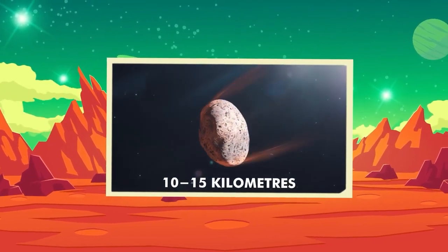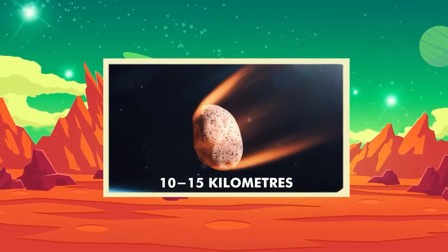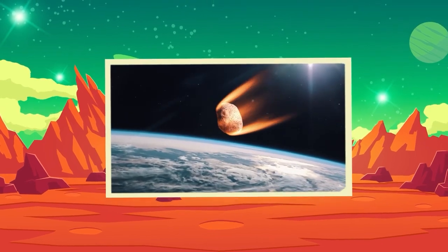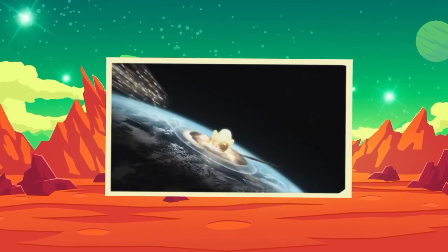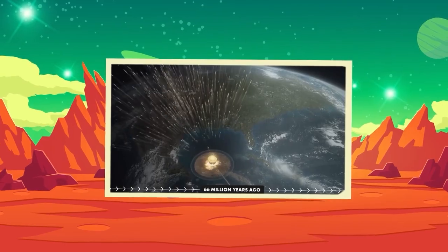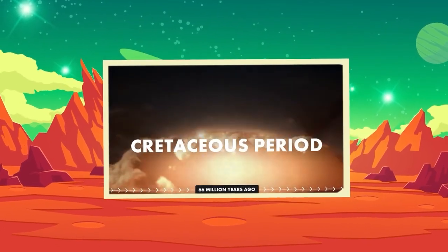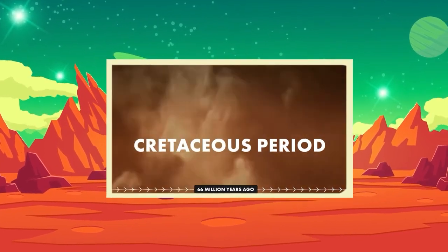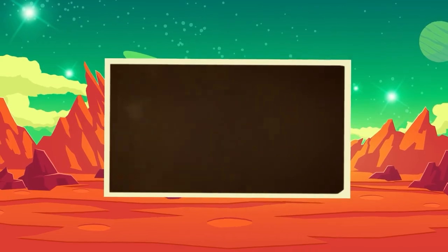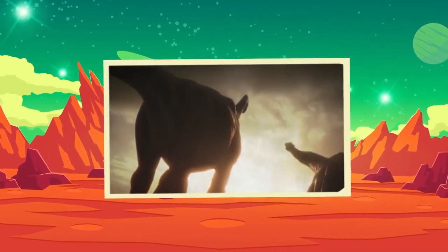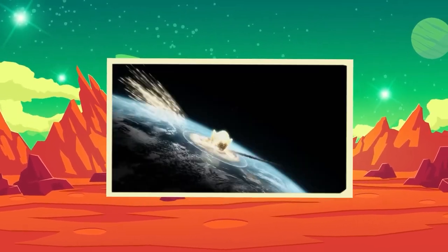Dinosaurs ruled the earth for millions of years, but one day they disappeared. Scientists think it was because a giant meteor crashed into earth, creating big fires and blocking sunlight. The earth became too cold for dinosaurs to survive. But don't worry, some animals, like birds, are related to dinosaurs. So in a way, dinosaurs are still with us.